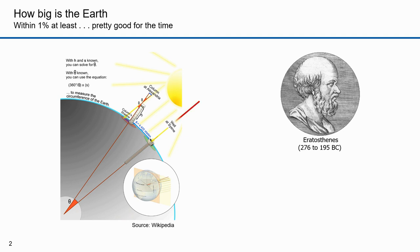He knew that on the summer solstice at local noon in the city of Syene on the Tropic of Cancer, the sun would appear directly overhead. There was a well in Syene, and at the summer solstice, the sunlight shined straight down the well. At the same time, there was a pillar in Alexandria that cast a shadow. The sun wasn't going straight down in Alexandria, confirming Aristotle's theory that the earth was a sphere.